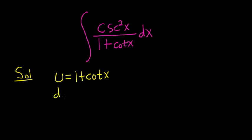Then du, well the derivative of cotangent is negative cosecant squared. So we get negative cosecant squared x dx.